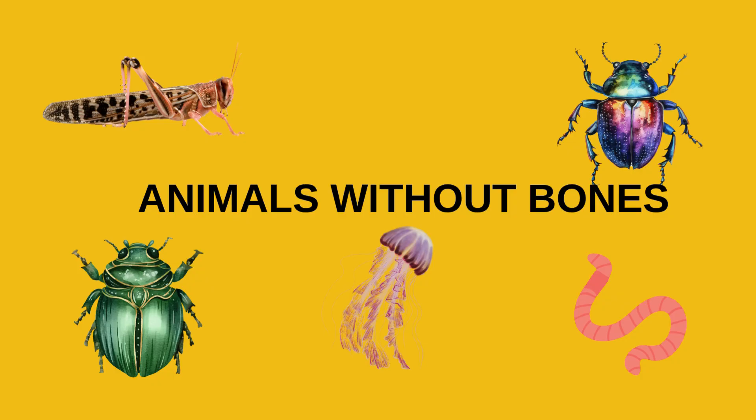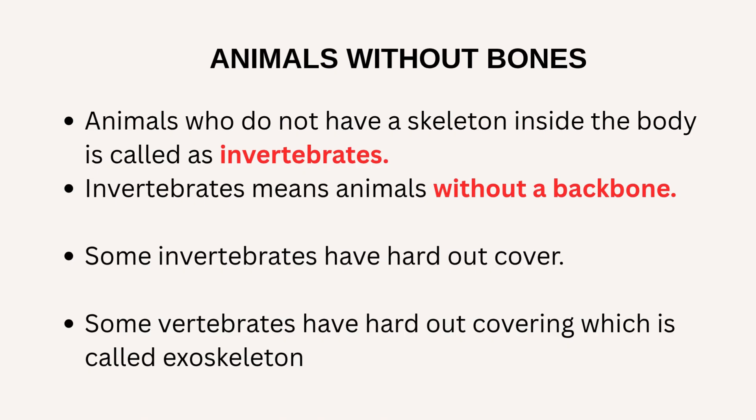Next, we are going to learn about animals without bones. Animals who do not have a skeleton inside the body are called invertebrates. Invertebrates means animals without a backbone. Some invertebrates have a hard outer cover, which is called an exoskeleton.